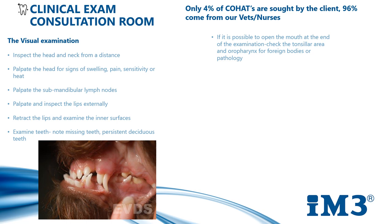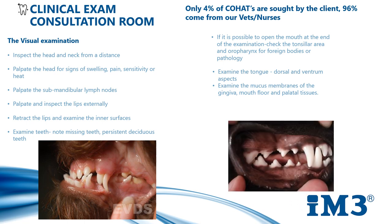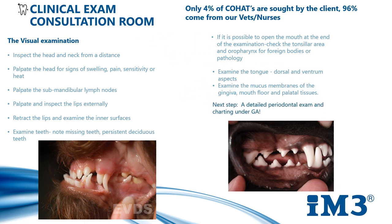Examine the tongue, both dorsally and ventrally. Examine the mucous membranes of the gingiva, mouth floor and palatal tissues. Note any abnormalities such as bleeding, unusual swelling, foreign bodies, inflammation, ulceration or changes in colour. Once we have done this, we are then ready for a full GA and a detailed periodontal exam.